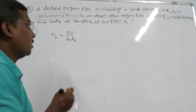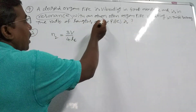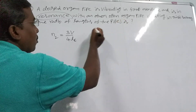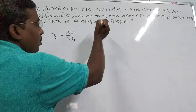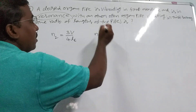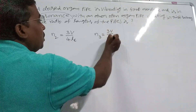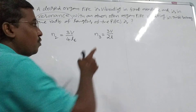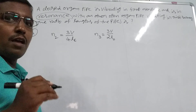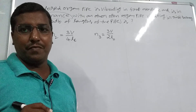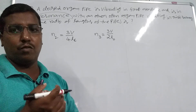Similarly, for the open organ pipe in resonance vibrating in third harmonic, the third harmonic formula is 3V by 2L_0 — note it is 2 in the denominator, not 4, because it is an open pipe. Here L_0 is the open pipe length.